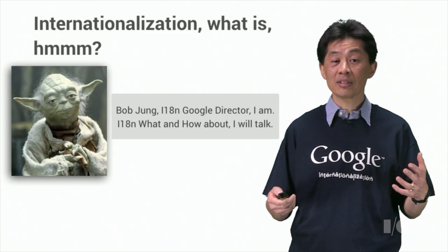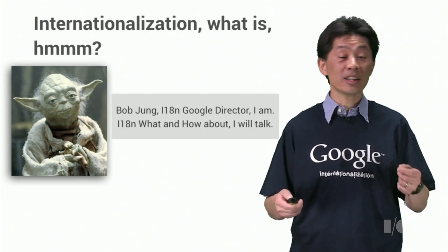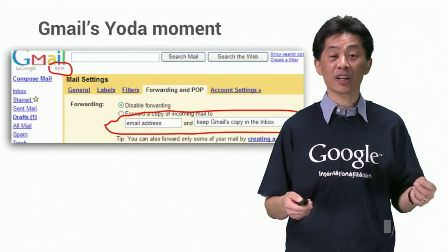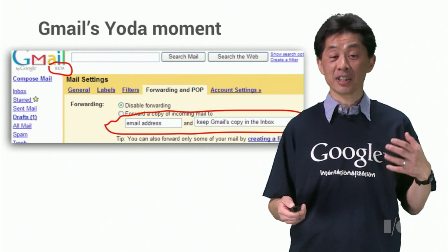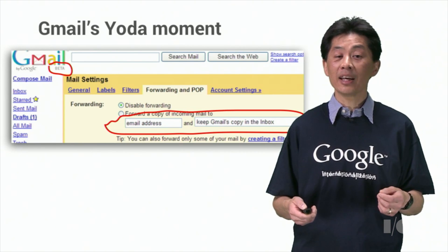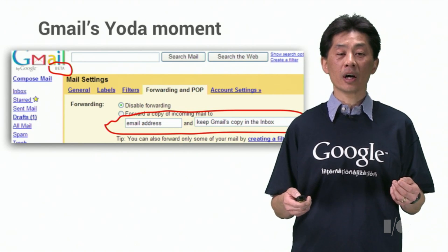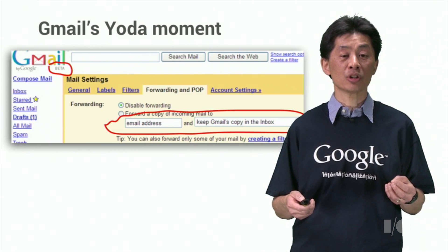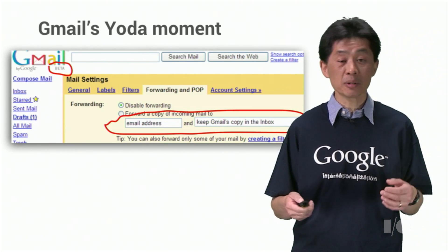Maybe a bit hard to understand? Well, now let's look at a real example that Google launched. A long time ago, when Gmail was still in beta, one of the setting UIs concatenated preferences to form a sentence reading: 'forward a copy of incoming mail to email address and keep Gmail's copy in the inbox.' Seems reasonable.